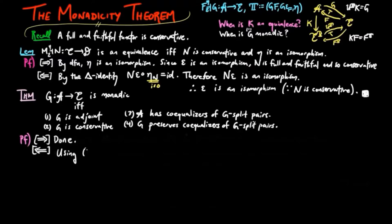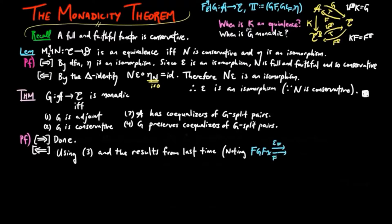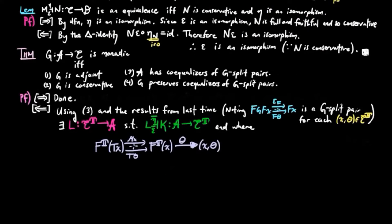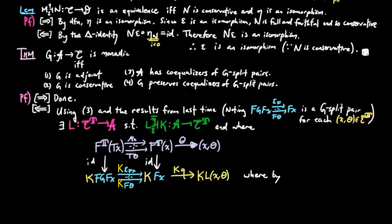To prove the converse, we use condition 3 and the results from the last video, noting that epsilon F composed with F theta is a G-split pair for each (X, theta) in the Eilenberg-Moore category. This gives us a functor L from the Eilenberg-Moore category to A, such that LK is in an adjoint situation, where the unit is defined by the universal mapping property of (X, theta) as the coequalizer of mu X and T theta in the Eilenberg-Moore category, and Q is the coequalizer of epsilon FX and F theta in the category A.